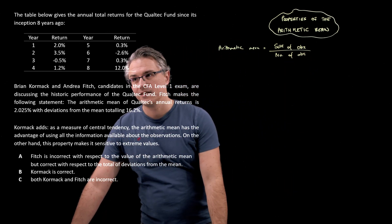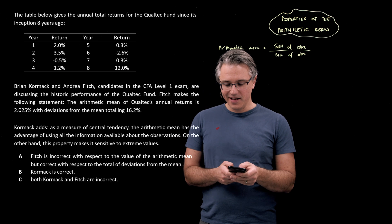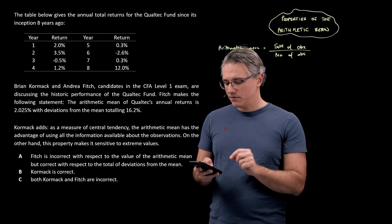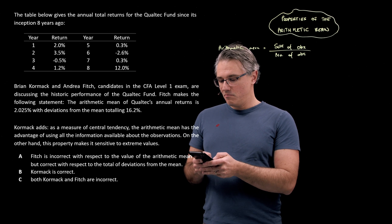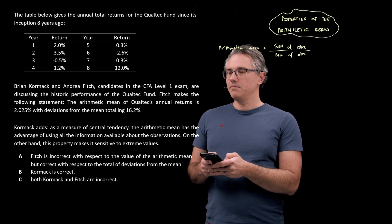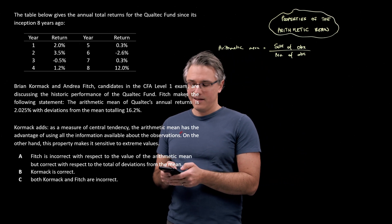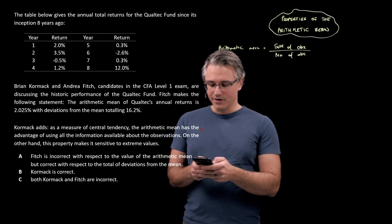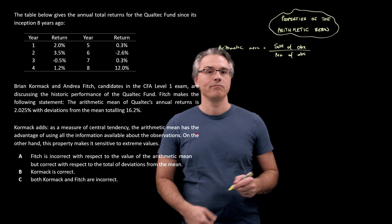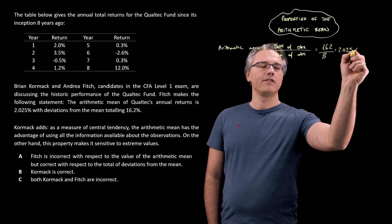And in this case, I'm going to take my calculator. It's so easy that you don't necessarily need to see it. Let me just open my calculator up and just type in these returns, being conscious of whether it's positive or negative. So it's 2 plus 3.5 minus 0.5, plus 1.2, plus 0.3, minus 2.6, plus 0.3 and 12. And then this total, which came in at 16.2, I divide by 8. That's the number of observations, and I get 2.025%. That's the arithmetic mean. So 16.2 divided by 8 gave us 2.025%.